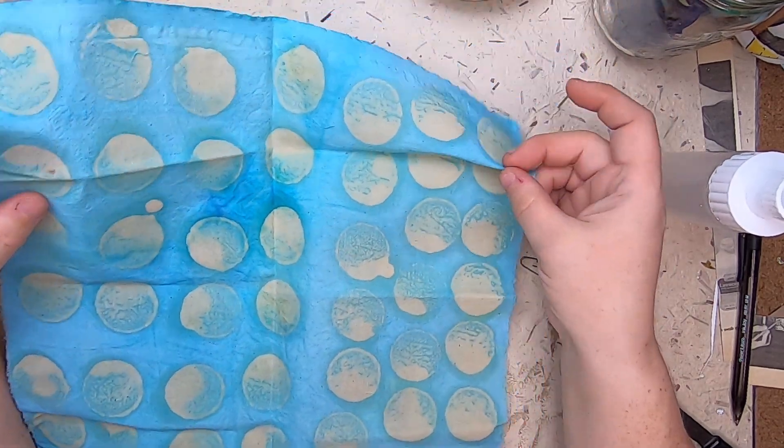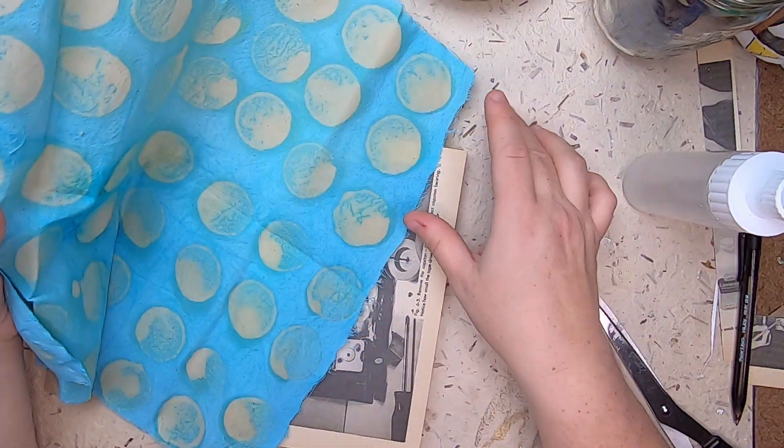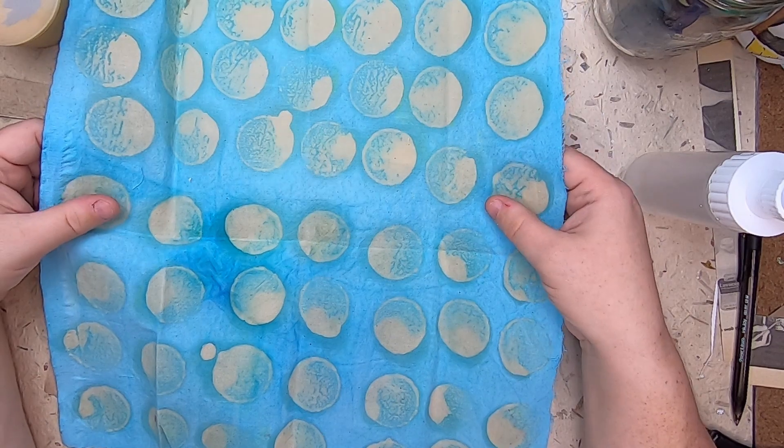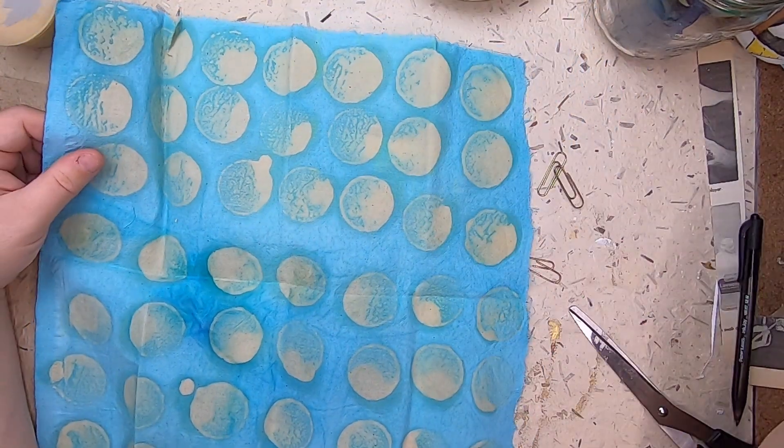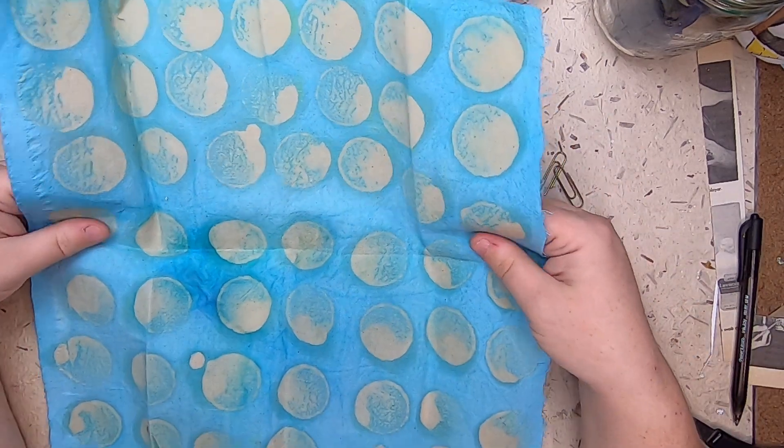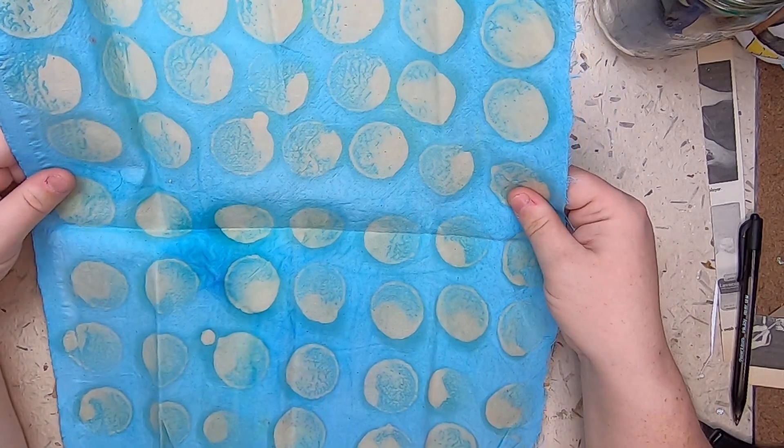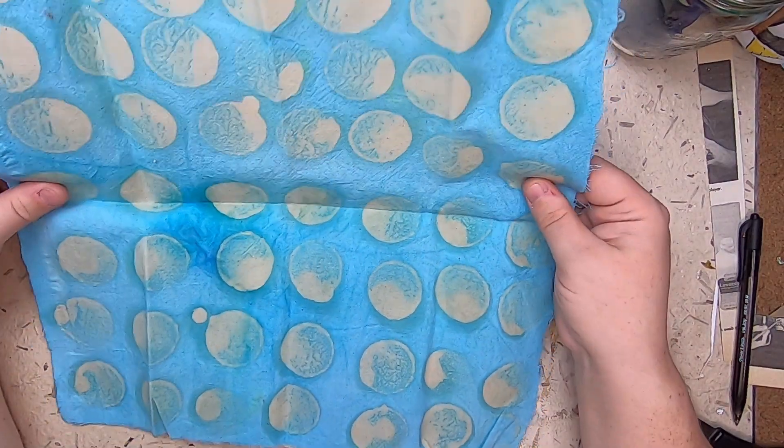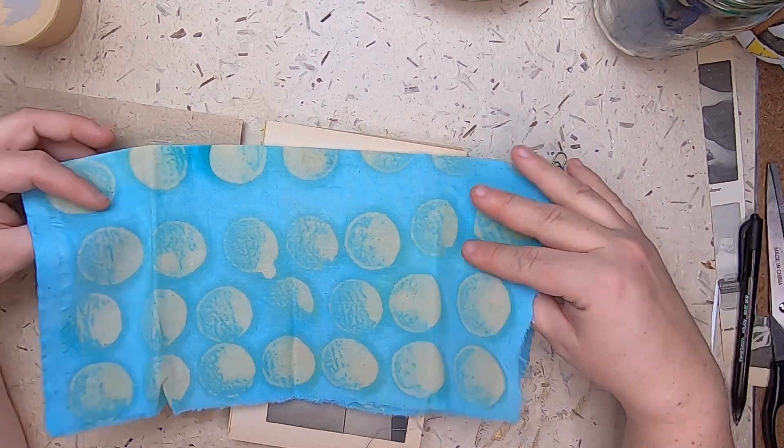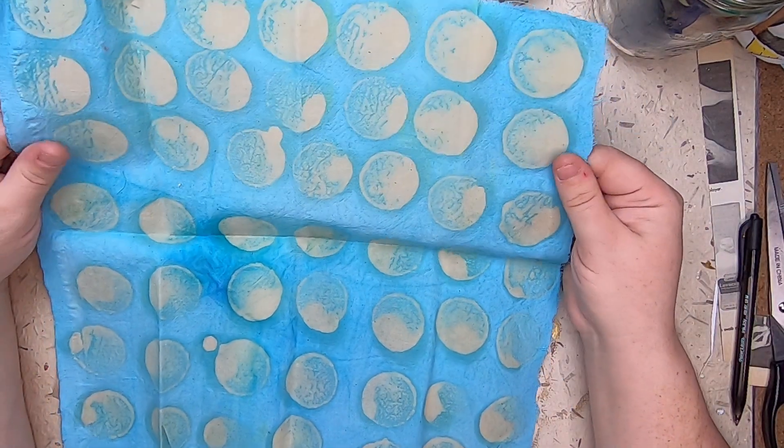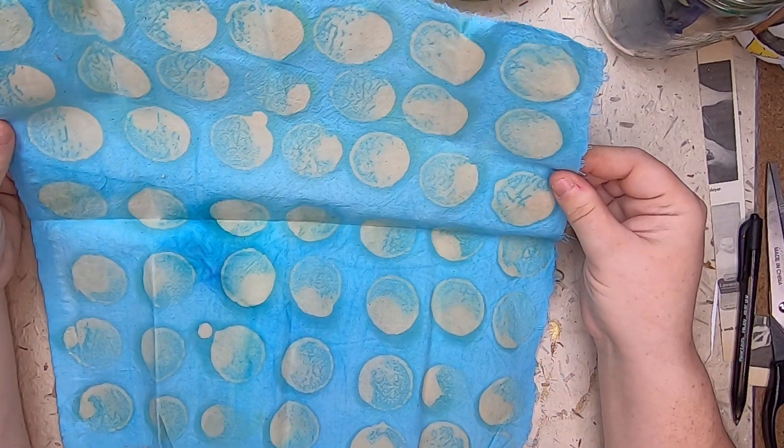Then I folded it all up and I put it in blue dye and let it dye. This was alum treated cotton. The dye was a fiber reactive dye. So that's the kind of dye that you want to use when you're dyeing natural fibers like cotton, not wool, but plant-based fibers. You want a fiber reactive dye.